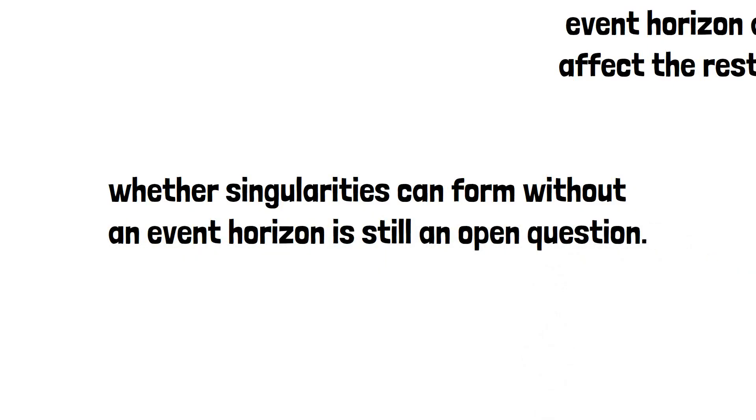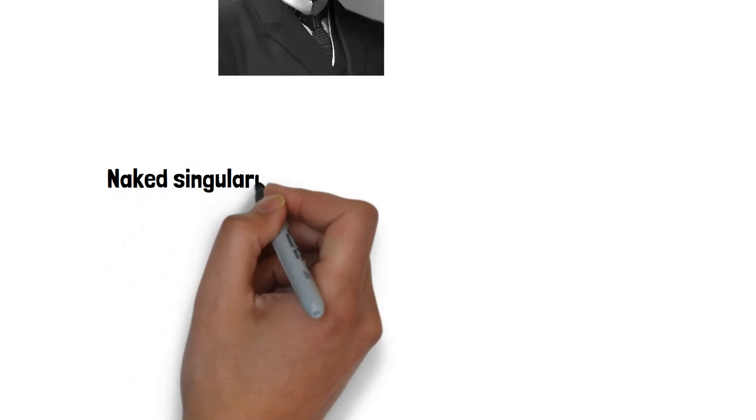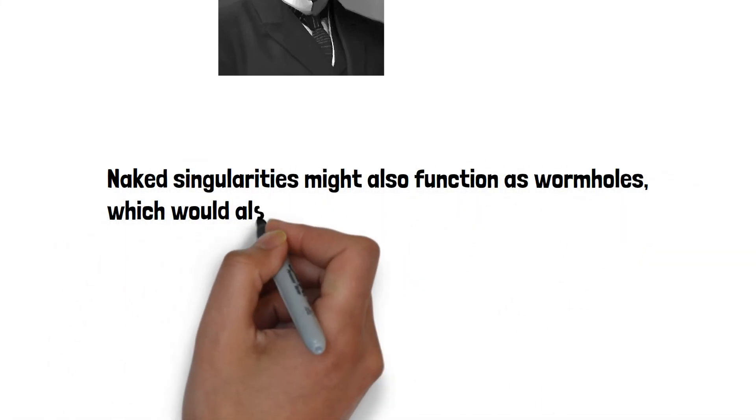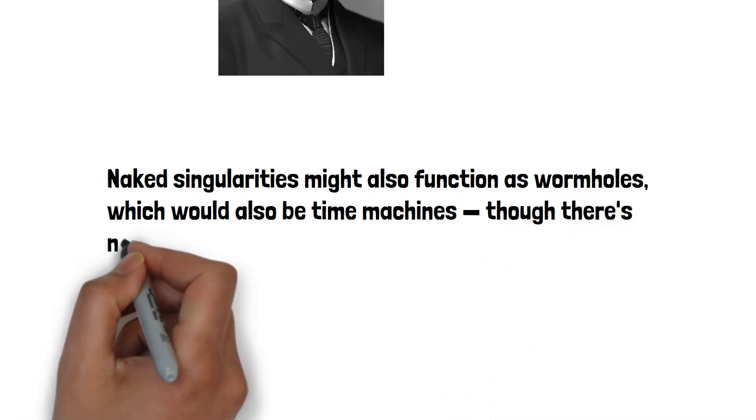And if they can exist, then Albert Einstein's theory of general relativity will need a revision, because it breaks down when systems are too close to a singularity. Naked singularities might also function as wormholes, which would also be time machines—though there's no evidence for this in nature.